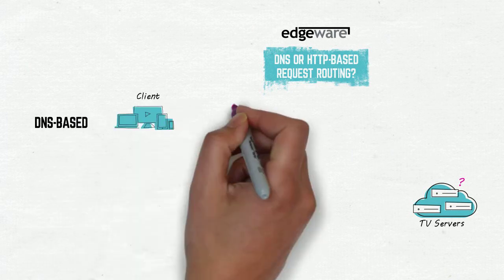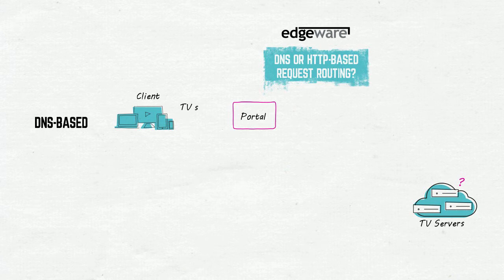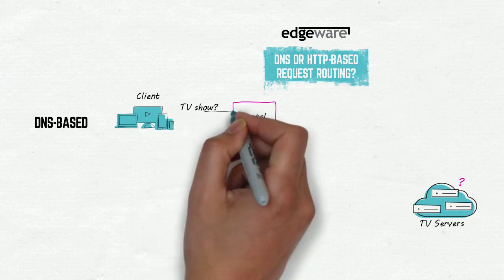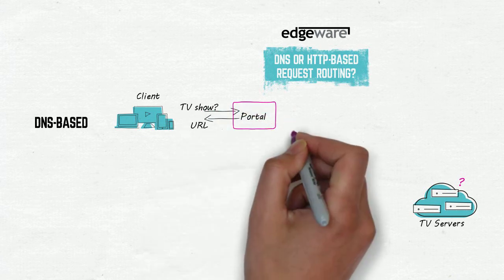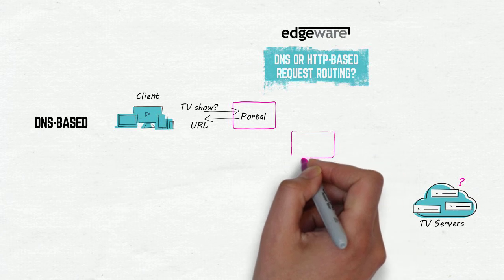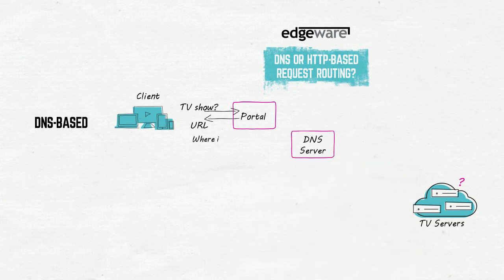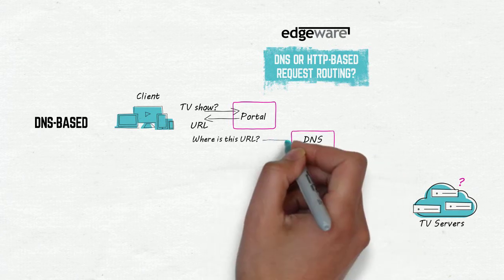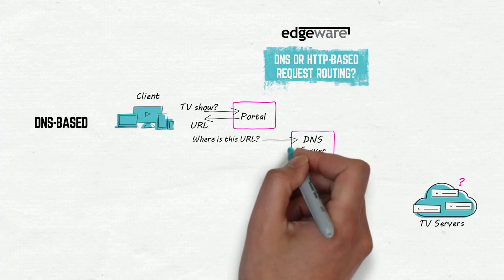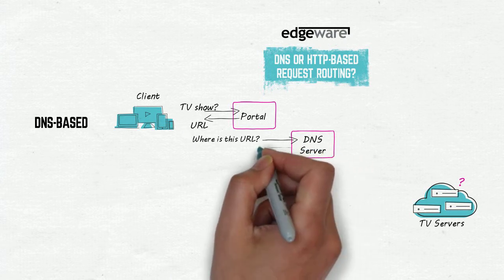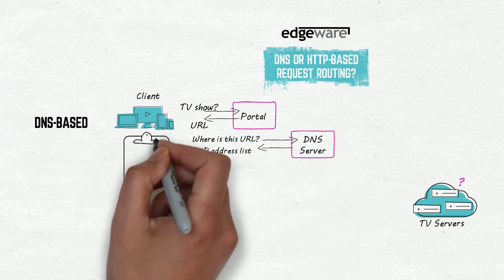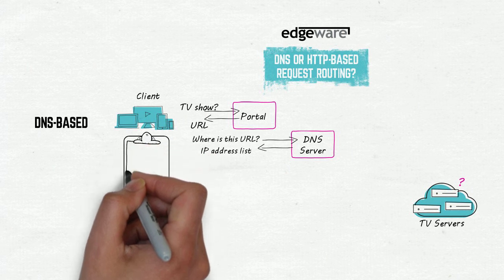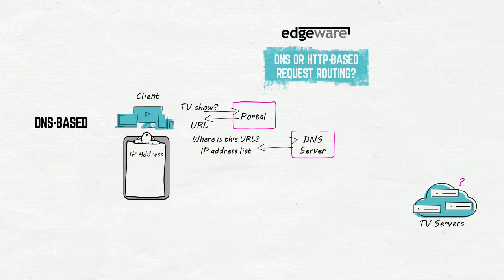When a client requests content, it receives the content's URL. The client then asks a DNS server for the destination of this URL — that is, which server the request should be routed to. With DNS-based request routing, the DNS server replies with a list of IP addresses of servers, with the closest to the client first on the list.